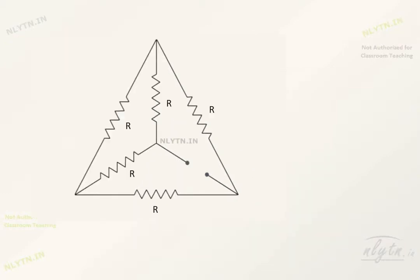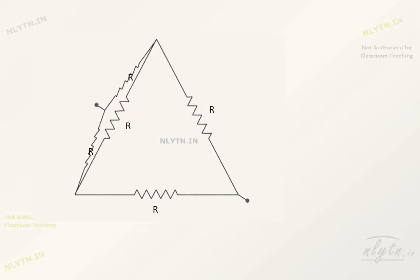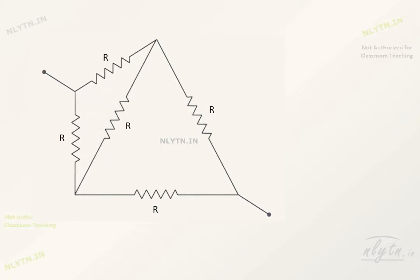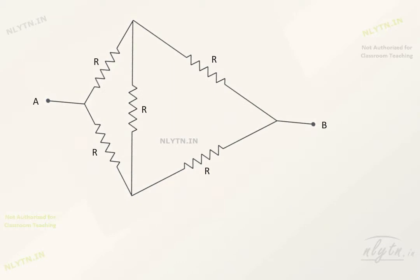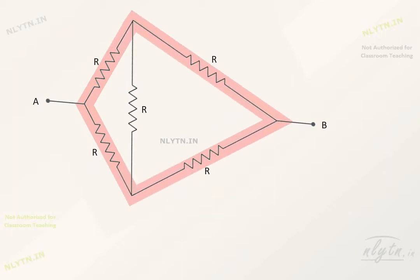Let us mentally unfold the circuit like this. Now we can see that this is a familiar circuit, and here we know that due to symmetry, flow of current will be equal in these segments, and thus these points will be equipotential.